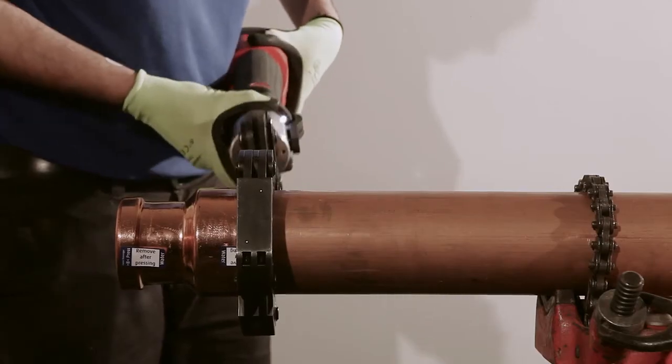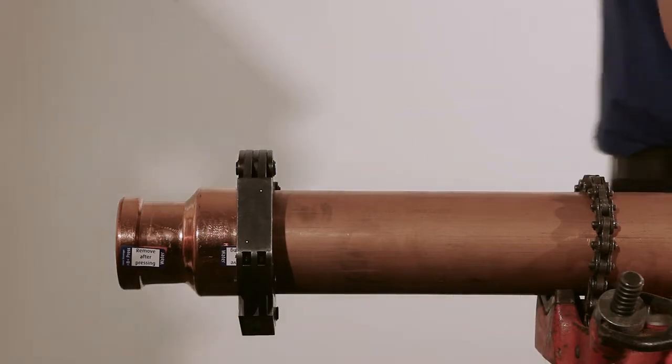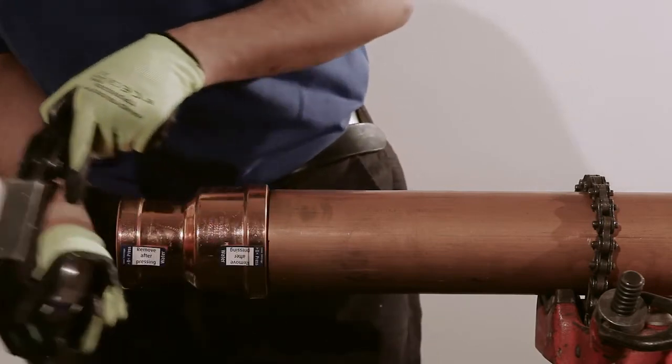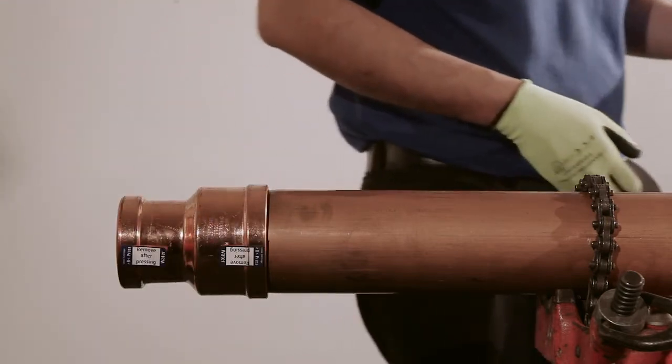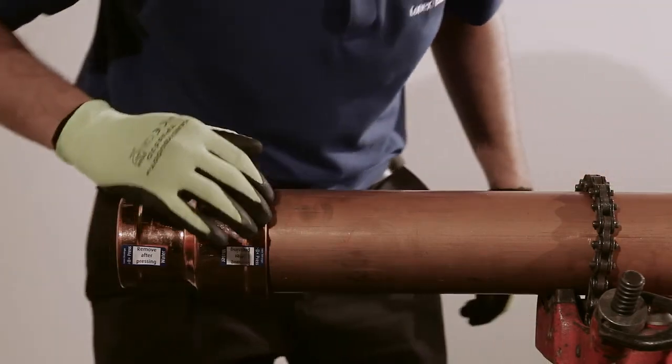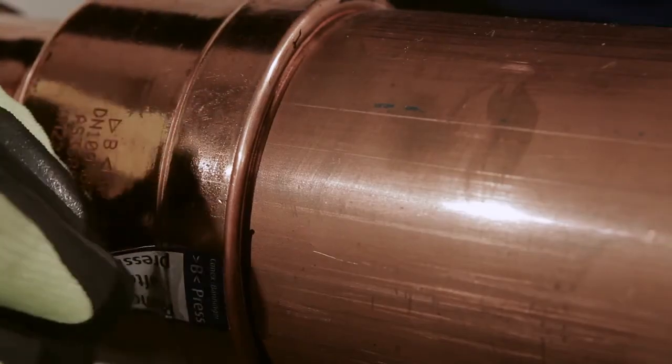There is no need to repress the fitting after the original cycle has completed. Remove the actuator from the press ring, remove the press ring from the fitting, then finally after checking the fitting depth mark is still in original location, remove the adhesive labels to indicate the joint is pressed and complete.